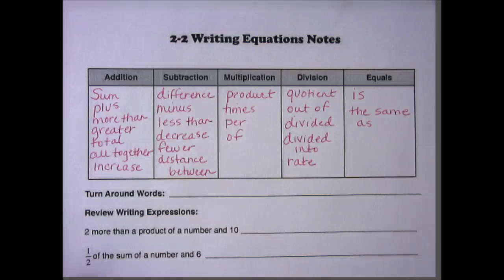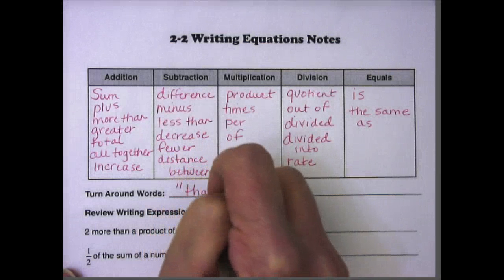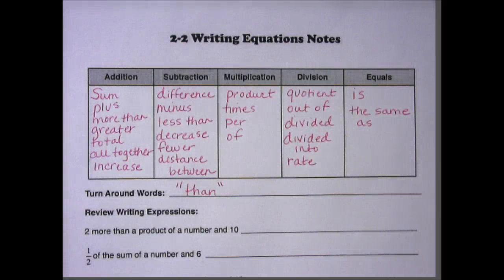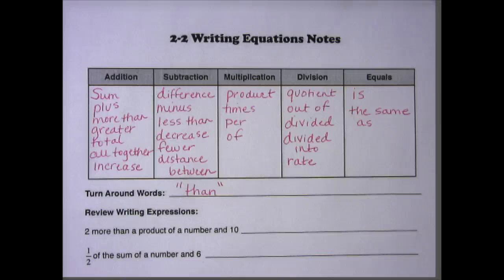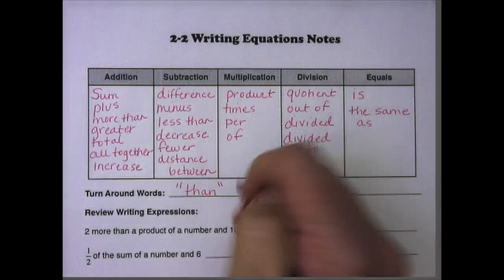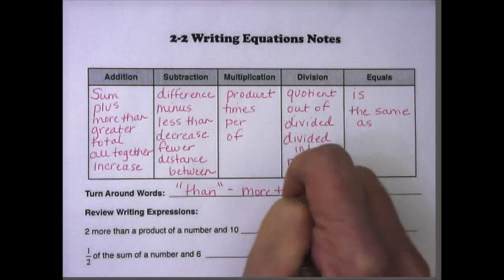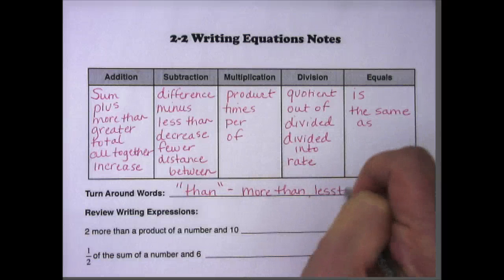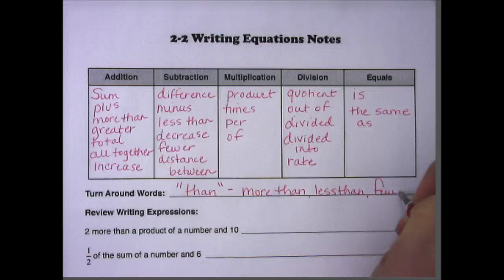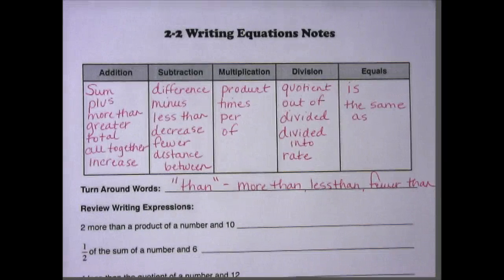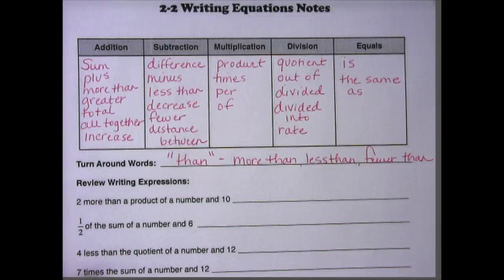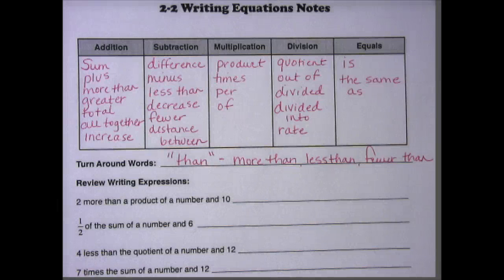Also, don't forget our turnaround words. The word then means that we're going to turn around the expression, so that we always generally read from left to right, but when we see the turnaround words, we're going to switch it from right to left. So the word then, you might see it with more than, less than, fewer than, and there may be others. Also, the word divided into is one that we haven't discussed, but if you see the words divided into, that is also going to be a turnaround word.